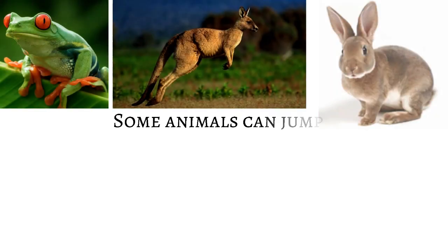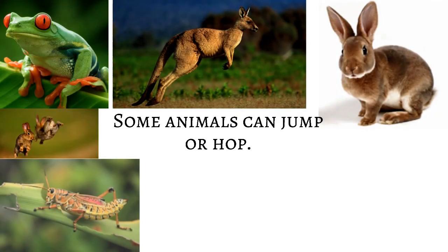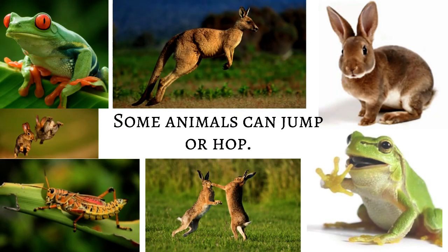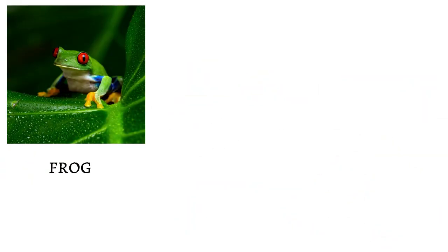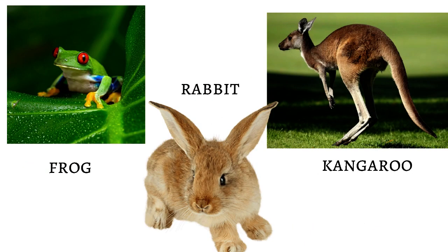Some animals can jump or hop. What is the special body part that enables these animals to jump or hop? Frogs, rabbits, and kangaroos are some examples of these animals.